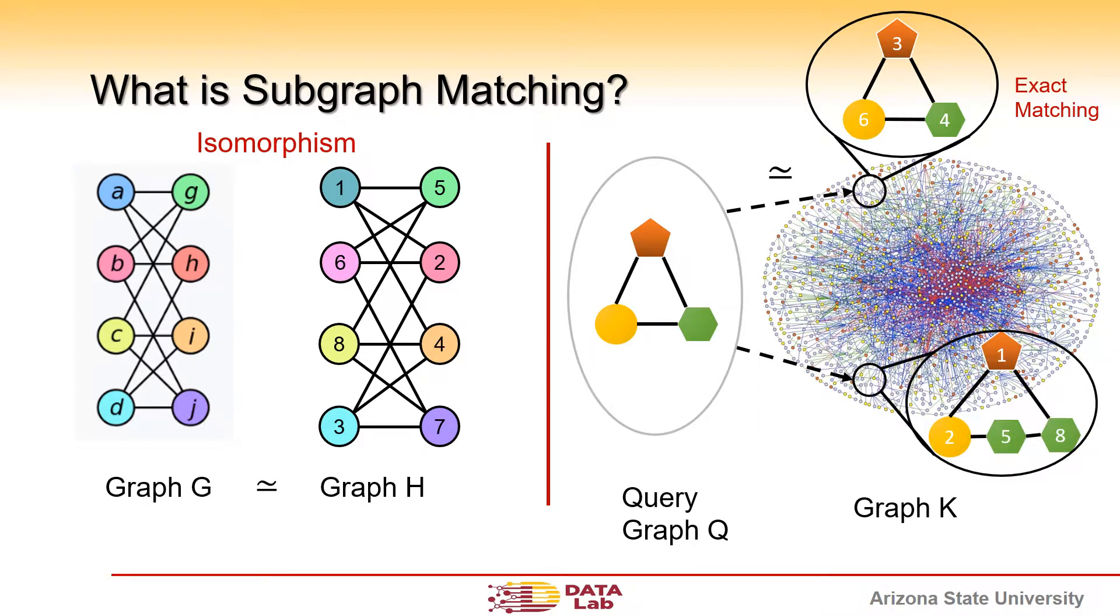...there may be a subgraph in K that looks very close to query Q except for those extra nodes and edges. This is an exact matching.